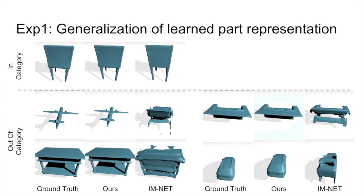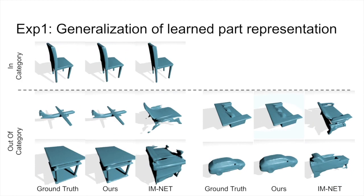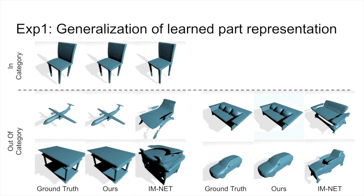We train an autoencoder only on the chair category in ShapeNet and manage to reconstruct unseen object categories where baseline methods struggle.